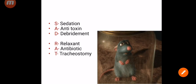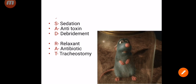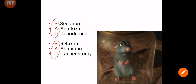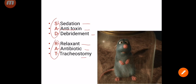If you forget the management, remember the mnemonic SAD RAT. S is for Sedation — admit, isolate, and give sedatives. A is for Antitoxin — anti-tetanus serum and human anti-tetanus globulin (the better option). D is for Debridement — wound debridement. R is for muscle Relaxants. A is for Antibiotics — penicillin and metronidazole. T is for Tracheostomy if needed. This mnemonic will help you recollect the key headings.